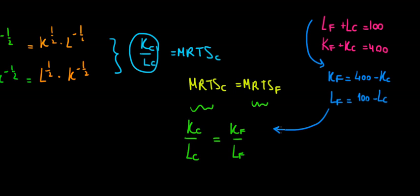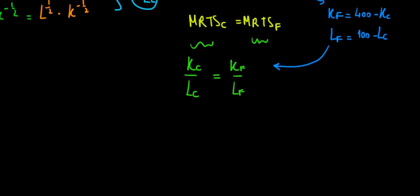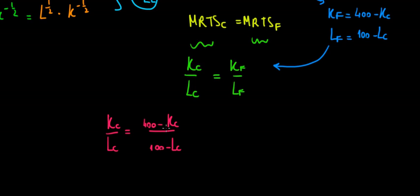Now let's input these into the MRTS equation. We would have: K_C / L_C = (400 minus K_C) / (100 minus L_C). Now let's do a cross product.